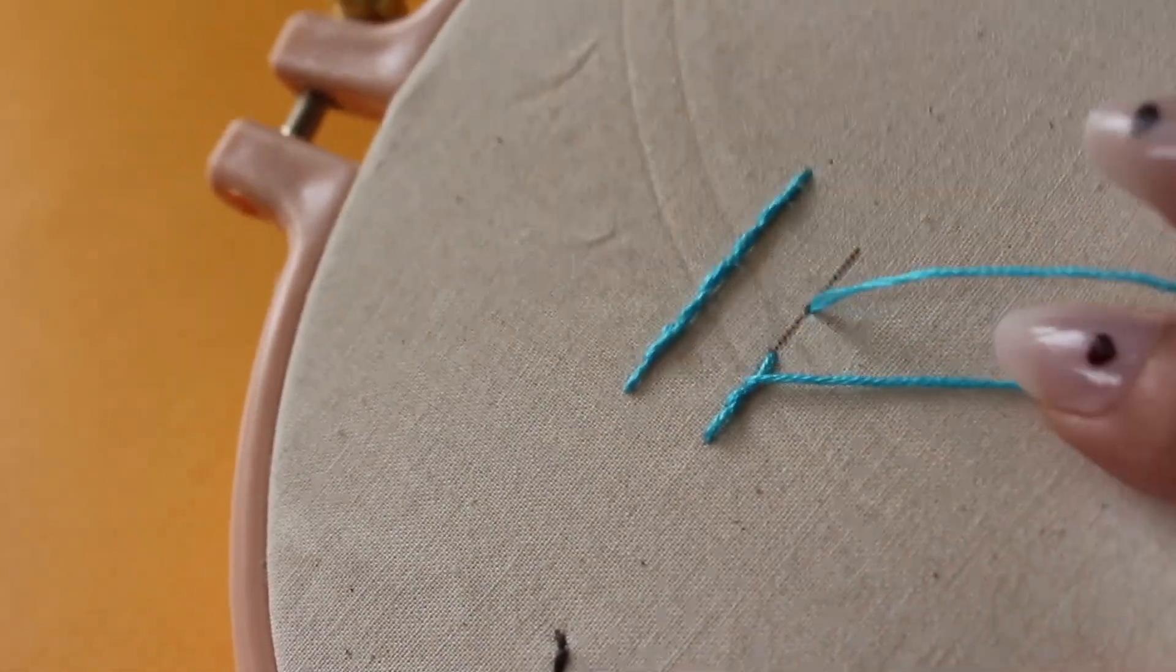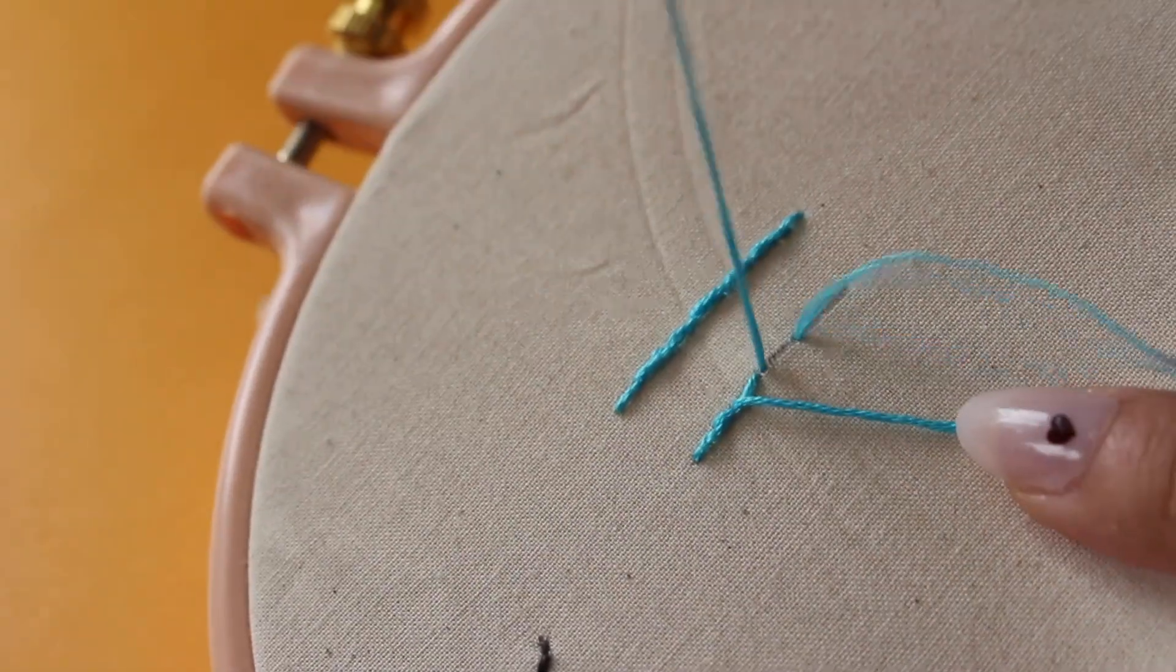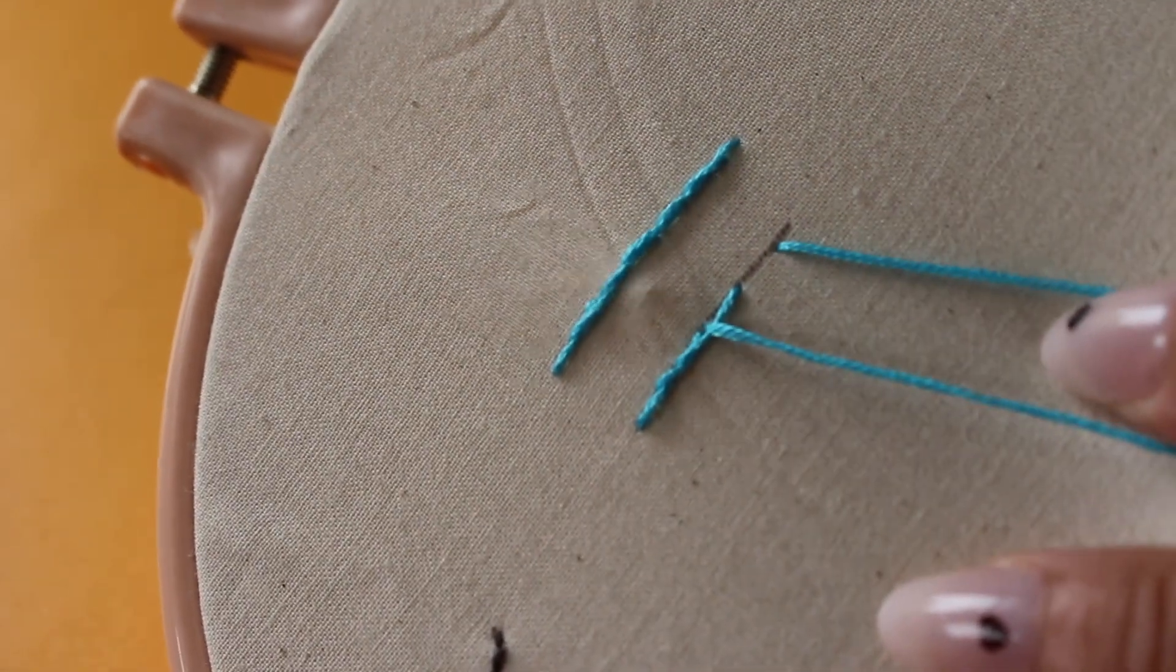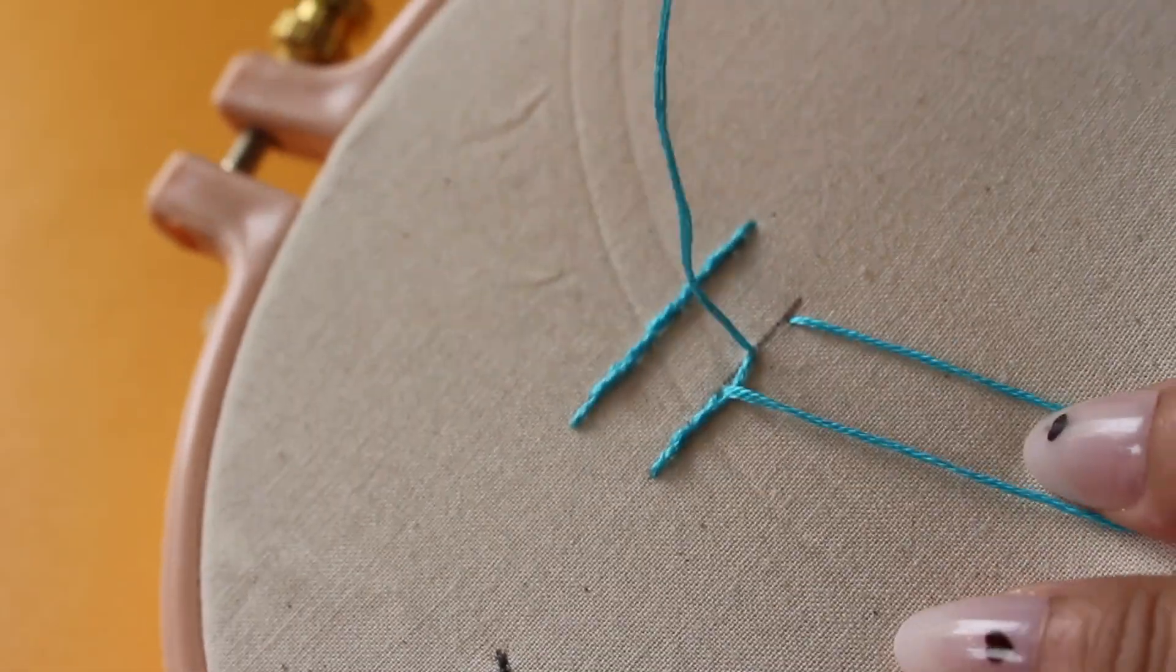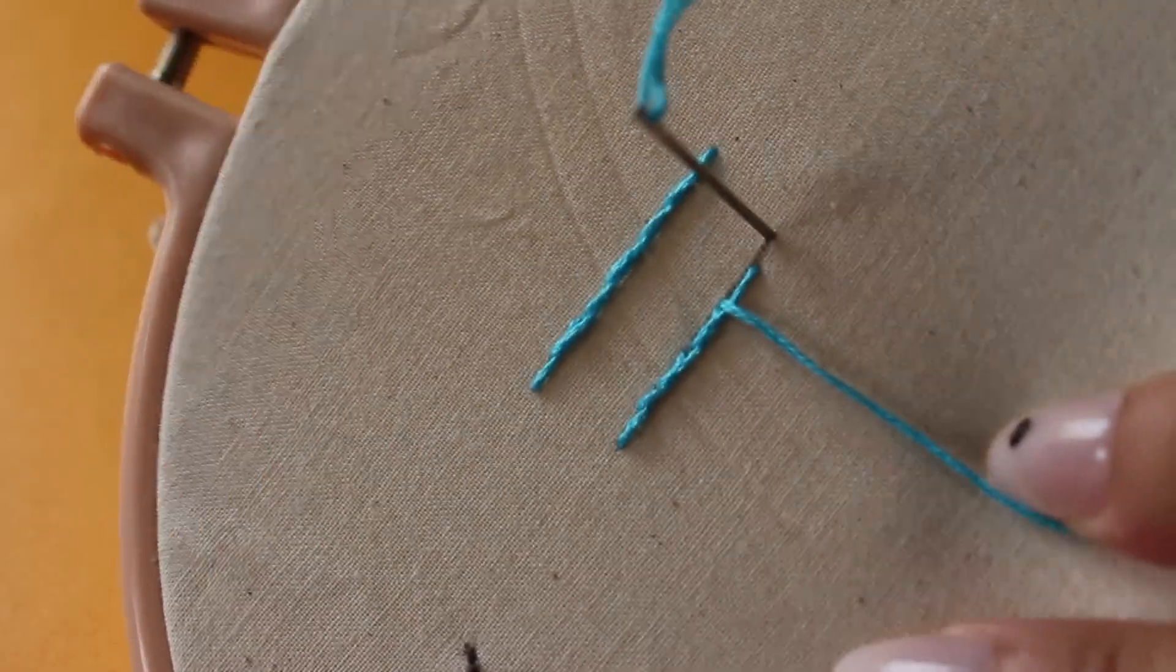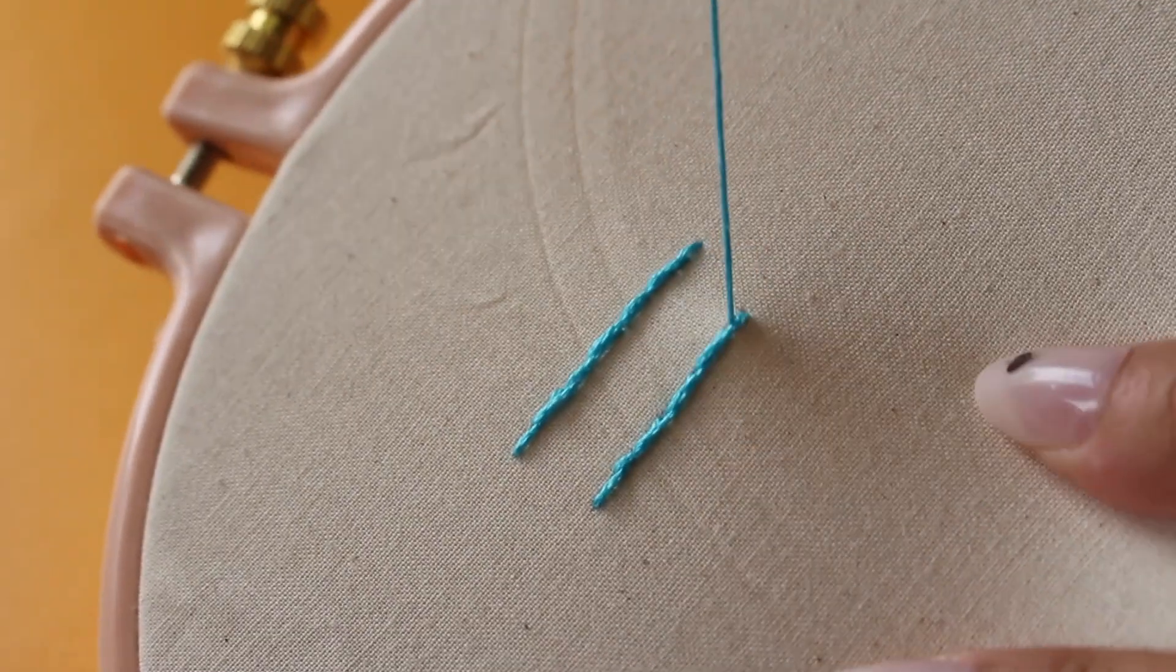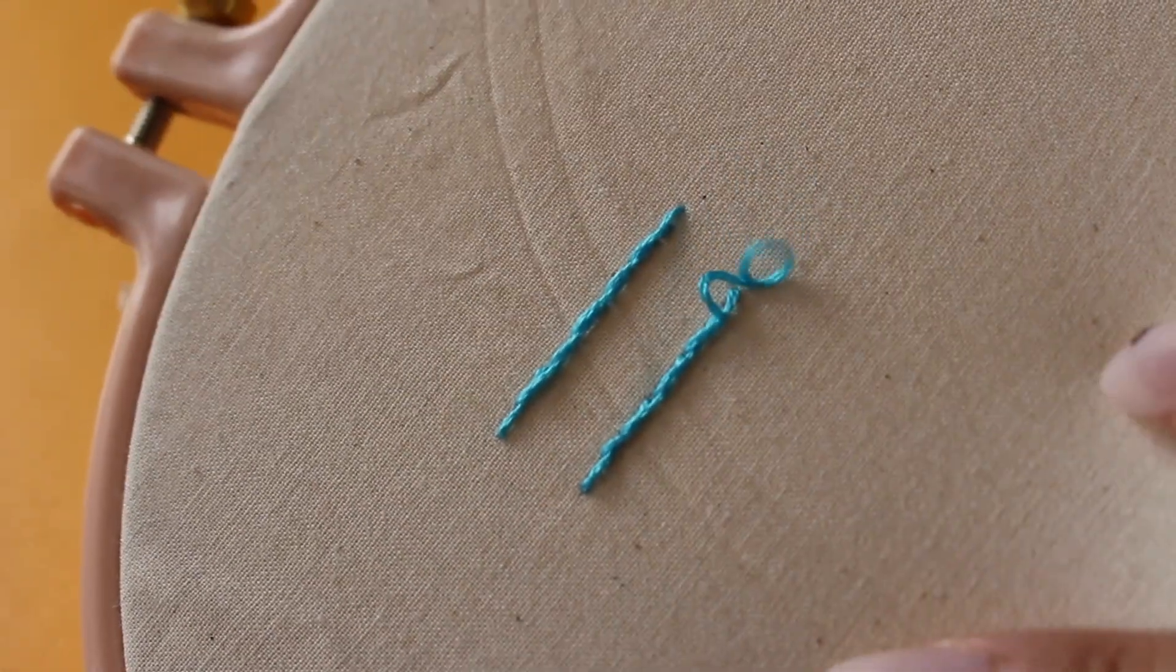Forward regular stitch length, and then up where you ended your previous stitch. Go down regular stitch, come up where you ended your previous stitch, leaving a loop and making sure that your loop is always going toward the same direction.